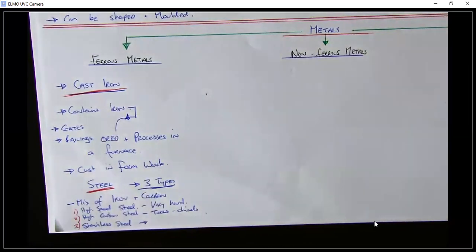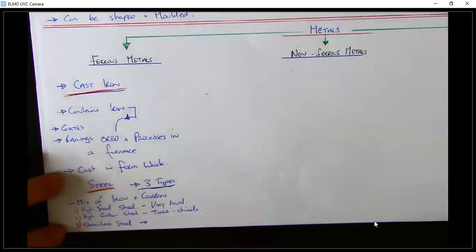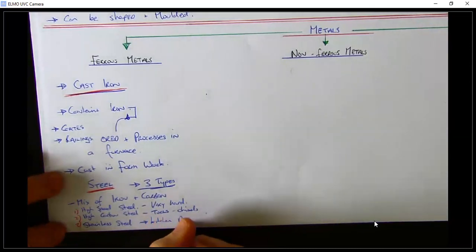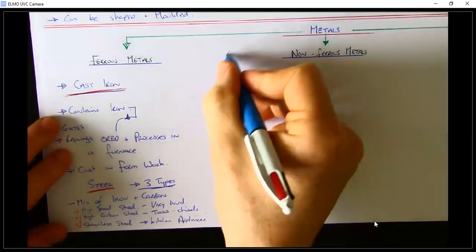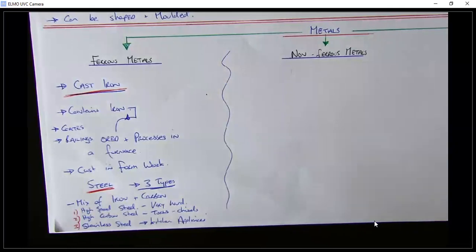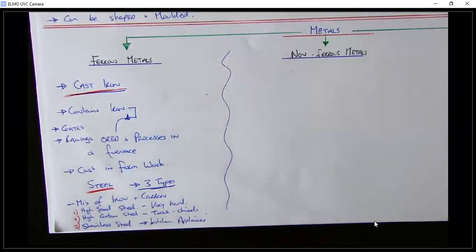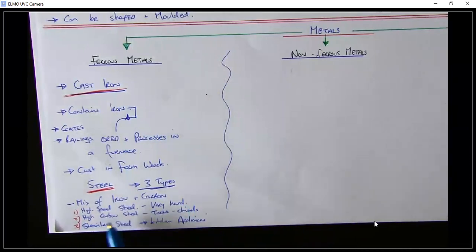Stainless steel is one you should be most familiar with — it's used a lot in kitchen appliances, like your fridge, sinks, and dishwashers that can just be wiped down easily. So that's ferrous metals: the two we explored are cast iron, used in gates and railings, and steel, used in large sheds and construction. Steel has three types: high speed steel used in construction, high carbon steel for tools like chisels, and stainless steel — easiest to remember as kitchen appliances.